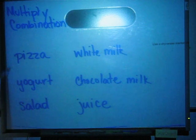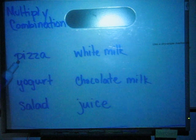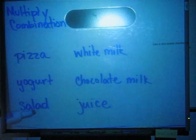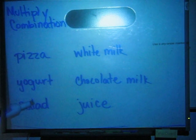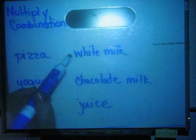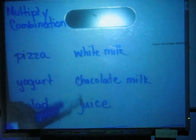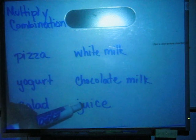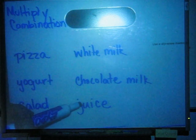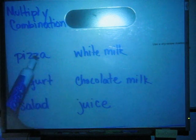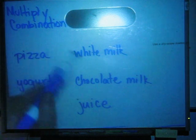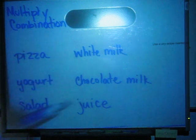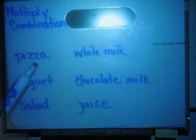Our choices for lunch are pizza, yogurt, and salad. And our drinks for lunch, we could have white milk, chocolate milk, or juice. There are a lot of different ways to find out how many different combinations we could have for lunch.